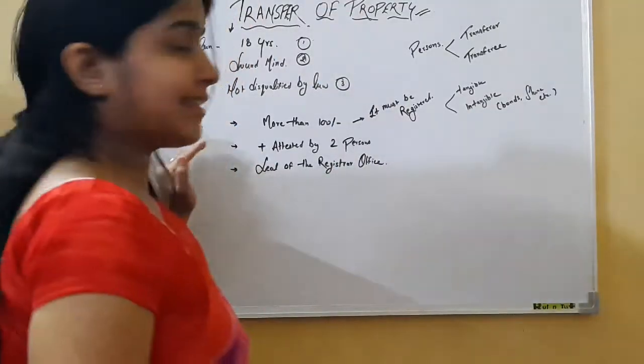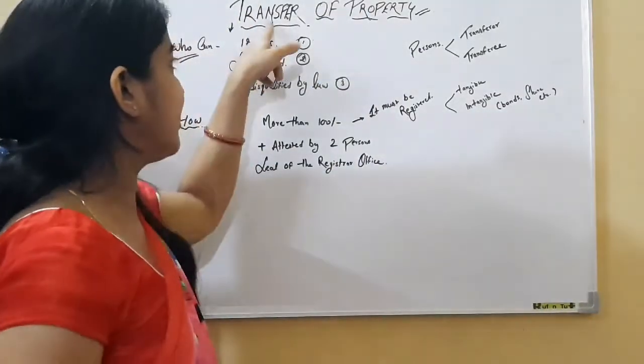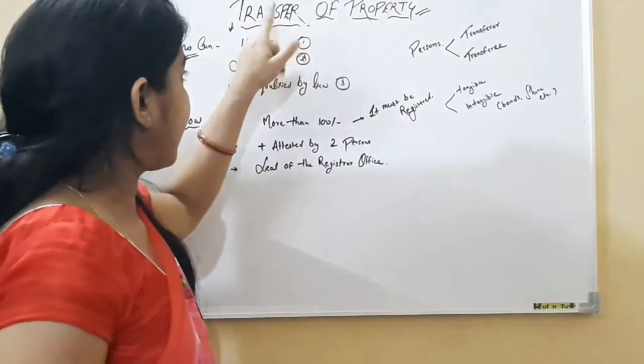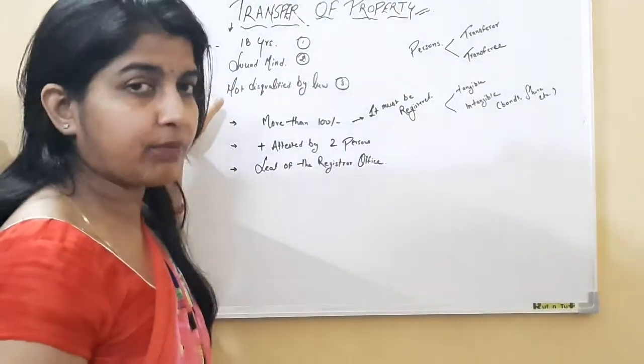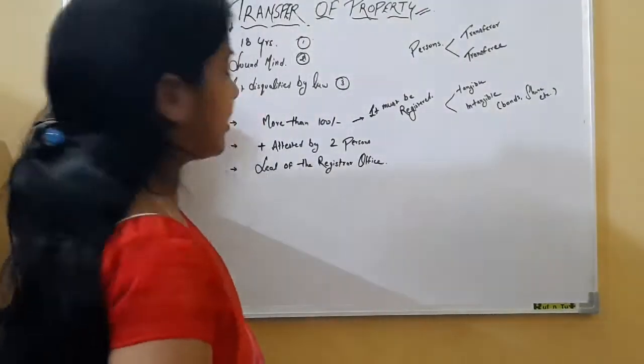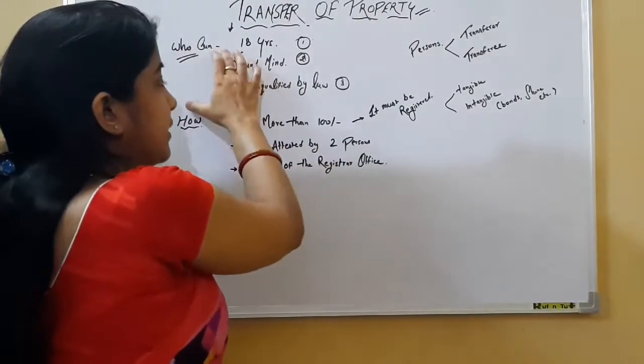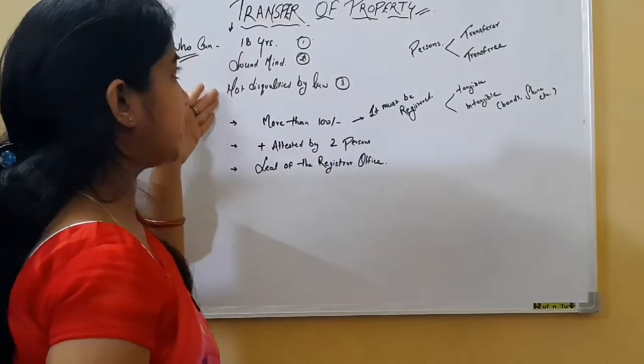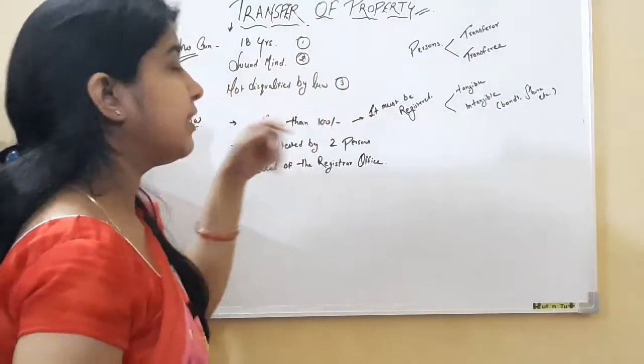Now our next topic, that is transfer of property. It is given that who can transfer the property, who can be valid to transfer the property. Because there are three persons, or these three types of persons can transfer their property to anybody.